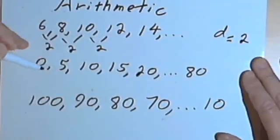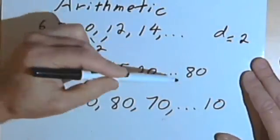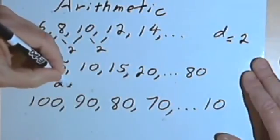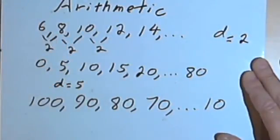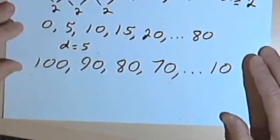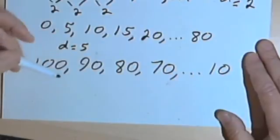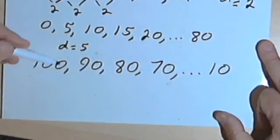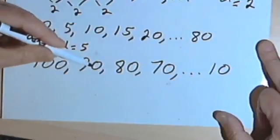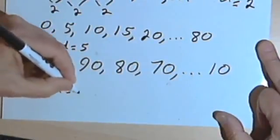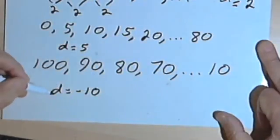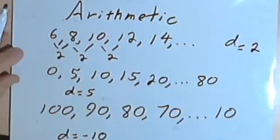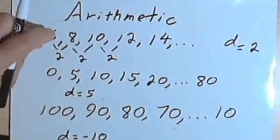In the same way, the next sequence I've written, 0, 5, 10, 15, 20, going up to 80, is again an arithmetic sequence. And in this case, d, the difference is 5, because I've added 5 to each term. I can also subtract a number, or if you want, add a negative number. So if I have the sequence 100, 90, 80, 70, and then going down to 10, what I'm doing is I'm subtracting 10 from each number. Or if you want, we can say that I'm adding a negative 10. So the difference in this case is going to be negative 10. So that's basically the idea of an arithmetic sequence. You're adding a constant amount to each term to get the next one.